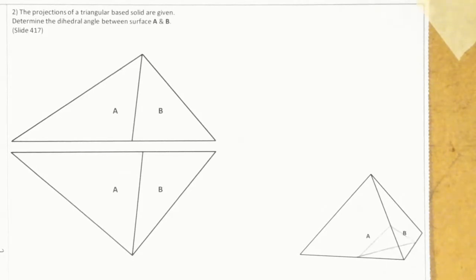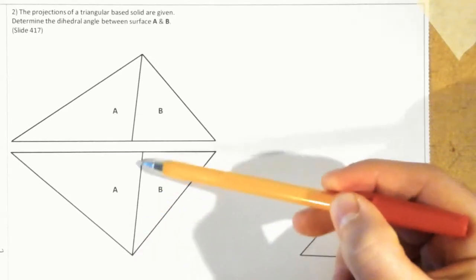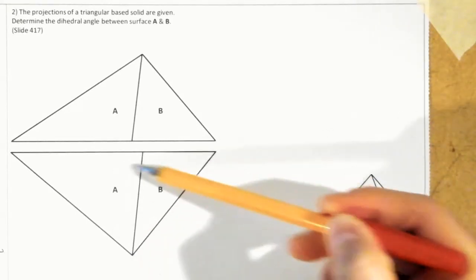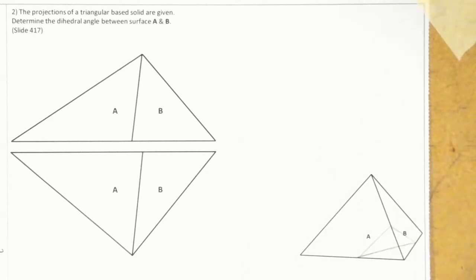As stated in a previous question, the dihedral angle is the angle between the line of intersection of two surfaces. We can see A and B are meeting at this surface here, and that is known as the line of intersection. The angle in between that line of intersection and those surfaces is what's known as a dihedral angle. There are two methods to get the dihedral angle: the rebatment method and the auxiliary views method. Both involve the same starting point — we have to take an auxiliary view.